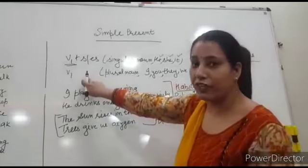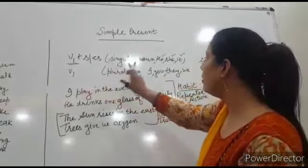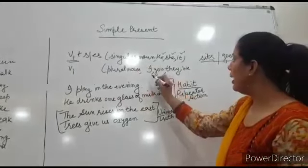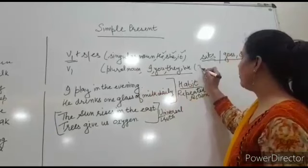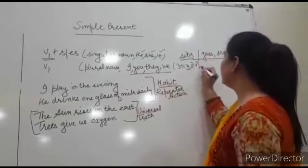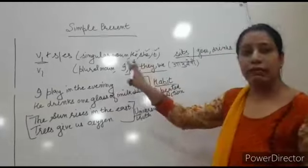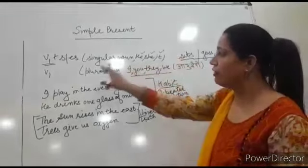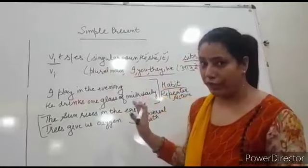After that, where we use only V1? V1 means first form of the verb with plural noun, where noun is plural and I, you, they, we. With this I, you, they, we, we use only V1. This is a shortcut method, then you find out where you have to use only V1.